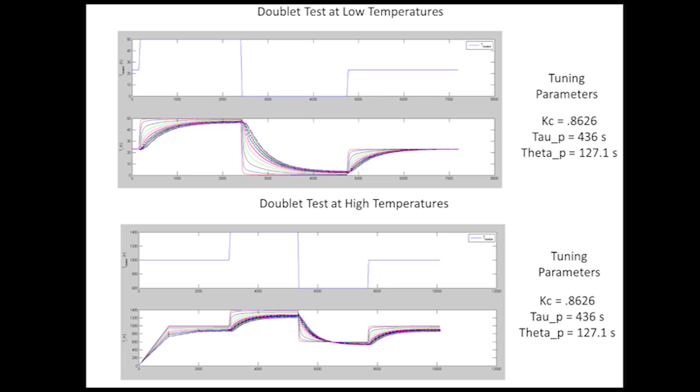To simulate this, we did some doublet tests, gathered the data, and threw it into LoopPro to gain some tuning parameters in hopes that we could find a controller that would allow us to reach the steady state value of 400 degrees Celsius in time. Once we threw it into LoopPro, we got tuning parameters for two different temperature ranges. The very low temperature range from 50 to 100 degrees Celsius, and the other is from 400 to 600 degrees Celsius. As you can see, the tuning parameters for both are exactly the same, which leads us to believe that this is a linear process.